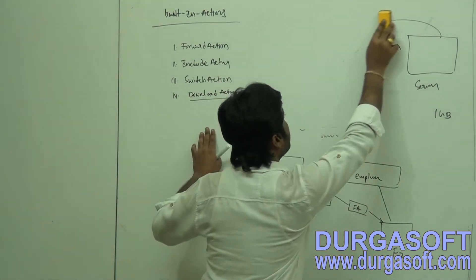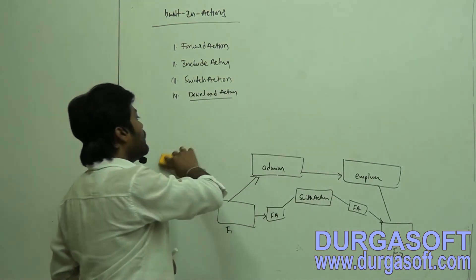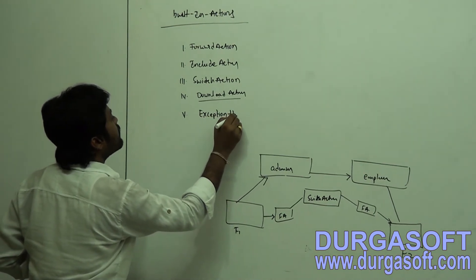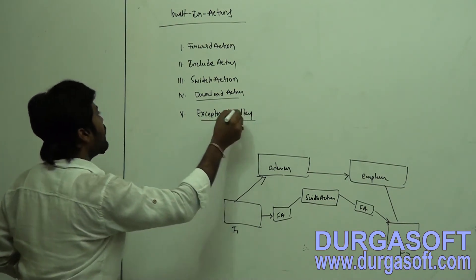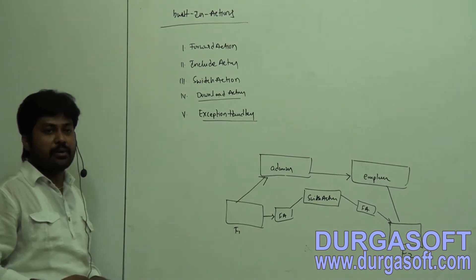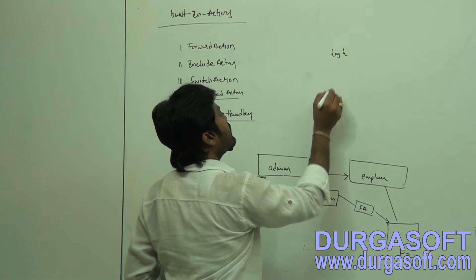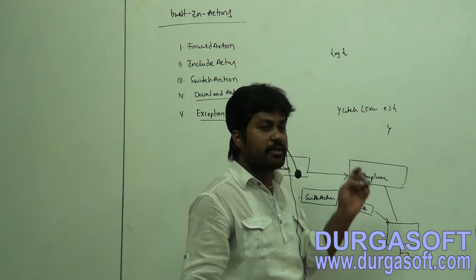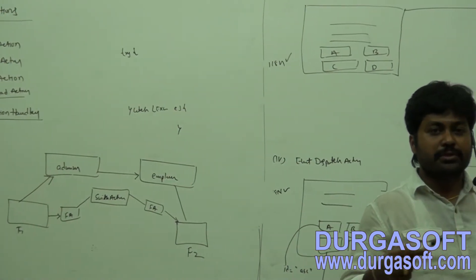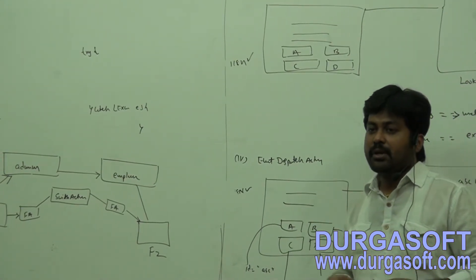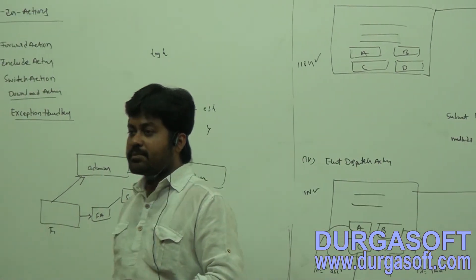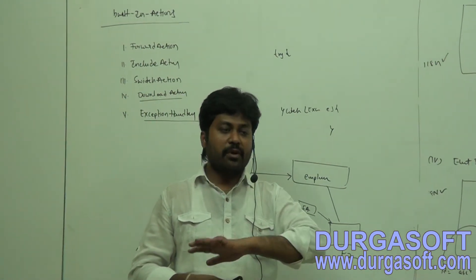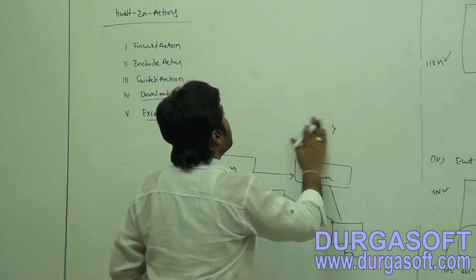Download Action makes file download simple — you just read the file, attach it to the Download Action class, and it sends bytes of streams to the browser. We also have one more action class: Exception Handler. For doing exception handling we use this class. Generally we handle exceptions using try-catch blocks, but in Struts action classes you don't need to write that code, because execute methods always throw exceptions.